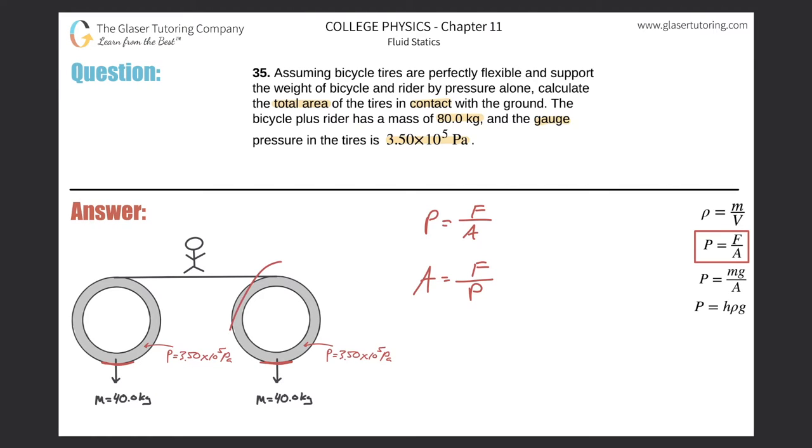Now the thing here is that since there are two tires, we can look at one system in singular and then multiply our answer by two, or we could take the whole system into account which would then be 2A. There's a couple of ways to approach this problem.